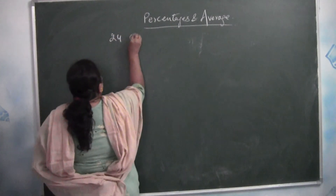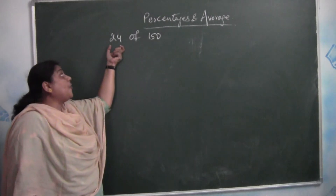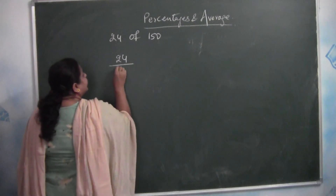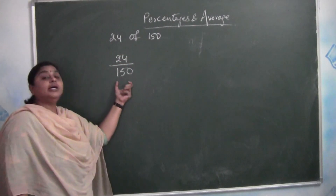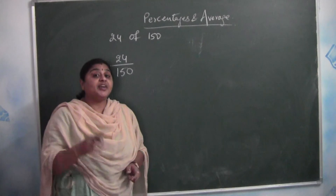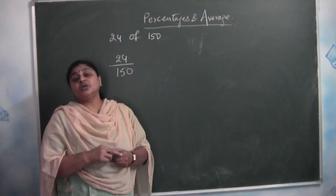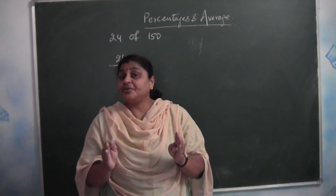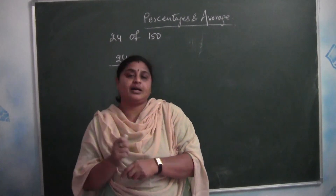Let us take 24 of 150. What percentage is 24 of 150? We write it as 24 by 150 — out of 150 it is 24. To convert to percentage we multiply with 100. If we have to convert a percentage to a value, we divide by 100. That is the only difference.